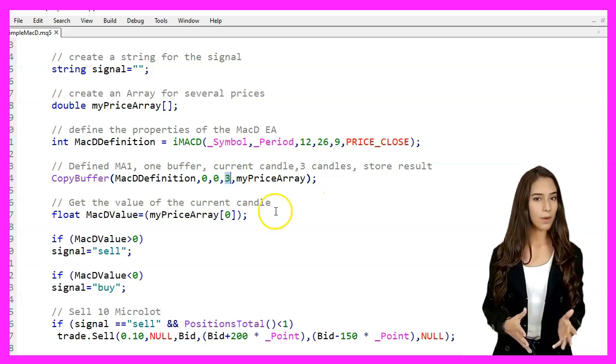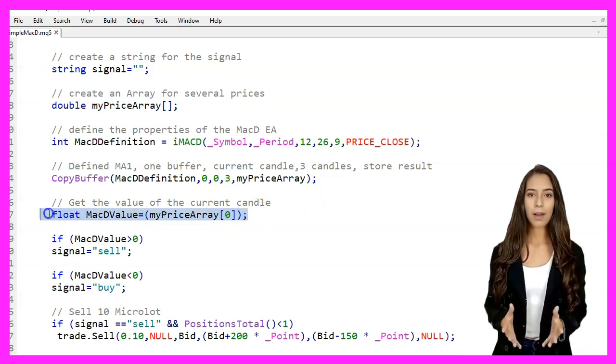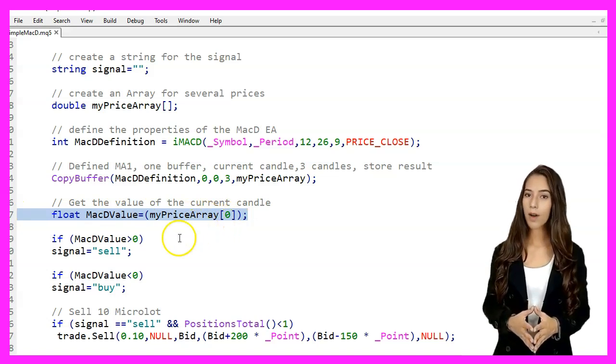Next, we get the value of the current candle's MACD by accessing the first element of MyPriceArray and store it in the MACD value variable.